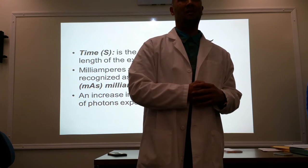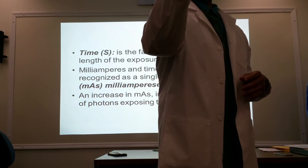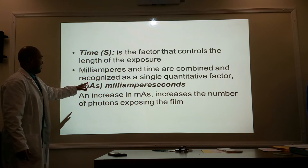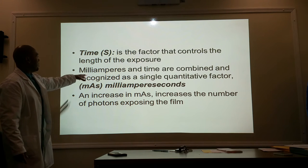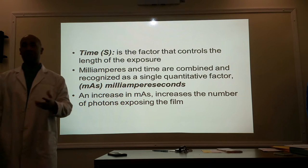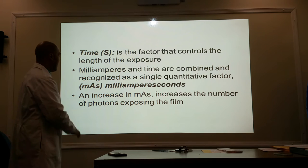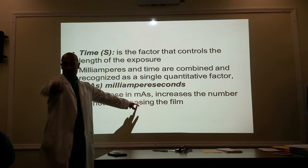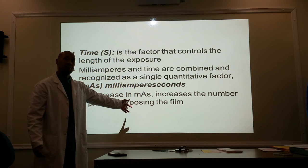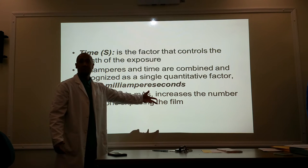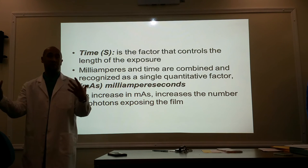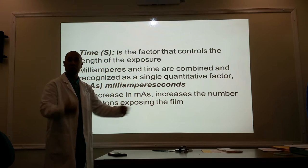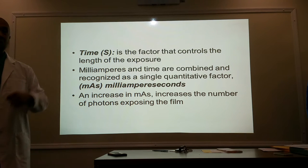Milliamperage and time are combined and recognized as one single quantitative factor: MAS — milliampere-seconds. An increase in MAS increases the number of photons exposing the film. You can either double it as a whole unit — as MAS — or you can double MA, or you can double time. Whatever you're doubling, it's going to be double exposure. Twice the MA or twice the seconds — you're doubling it.